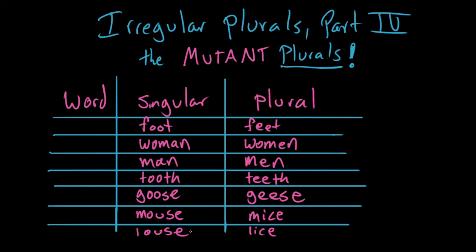You can see that mouse and louse actually change their end spelling as well from S-E to C-E, even though it's the same sound, louse, lice, for whatever reason just from some quirk of our spelling history. Not only do we change the vowels used here, we also change the consonants.